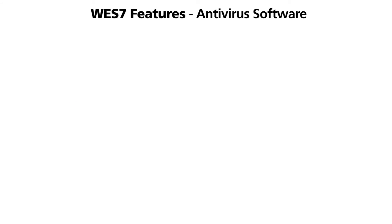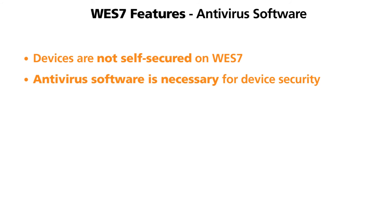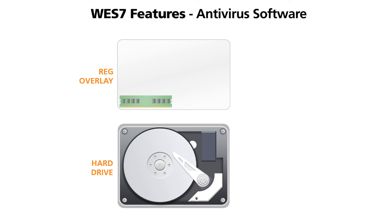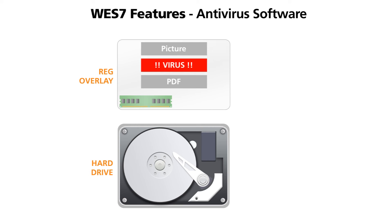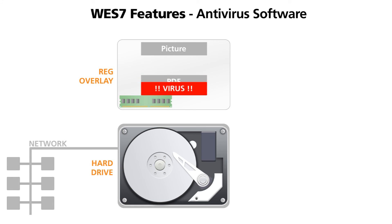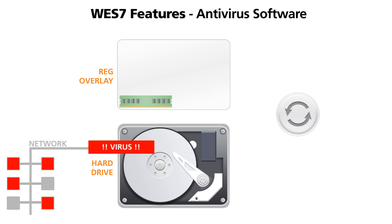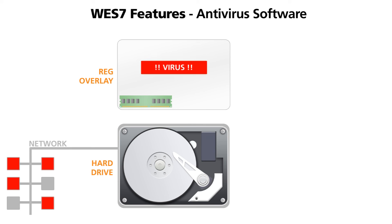Devices operating on a Windows Embedded Standard 7 image are not self-secured. Therefore, antivirus software is a necessary component for device security. Although write filters provide significant levels of protection, they are not a substitute for an antivirus solution. Worms and viruses can spread quickly throughout the network, and even if a runtime image is protected with an Enhanced Write Filter, a virus can still infect it. Because the virus is stored in the Enhanced Write Filter overlay, it will continue to propagate to other systems. Even if the overlay is discarded when the system reboots, other systems on the network can continue to infect your runtime image. If an Enhanced Write Filter overlay is committed to the protected volume, the system will become infected.